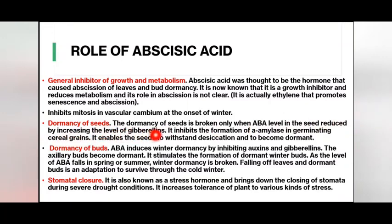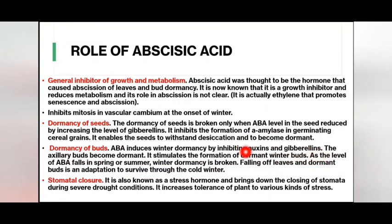Dormancy of seeds: the dormancy of seeds is broken only when the abscisic acid level in the seed is reduced by increasing the level of gibberellins. It inhibits the formation of amylase in germinating cereal grains and enables seeds to withstand desiccation and become dormant. Dormancy of buds: abscisic acid induces winter dormancy by inhibiting auxins and gibberellins. The axillary buds become dormant. It stimulates the formation of dormant winter buds. As the level of abscisic acid falls in spring or summer, winter dormancy is broken.